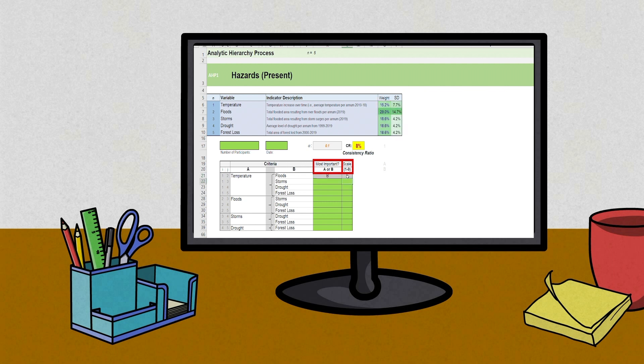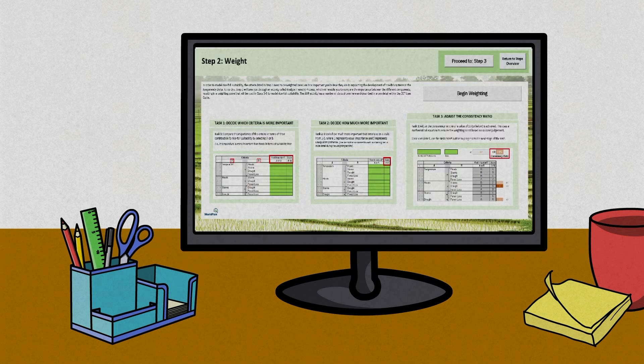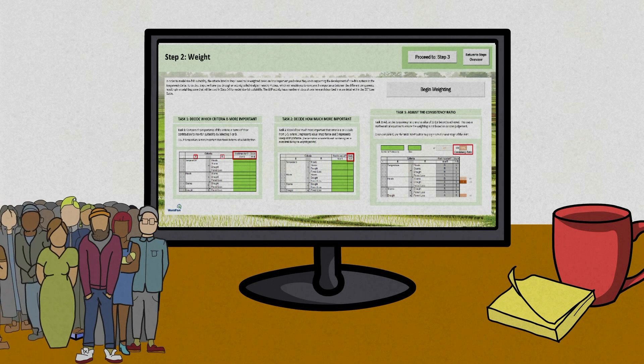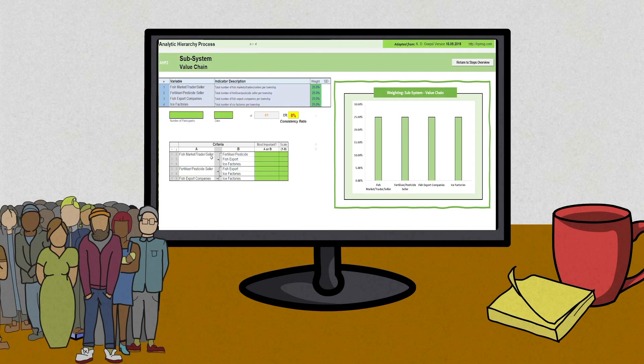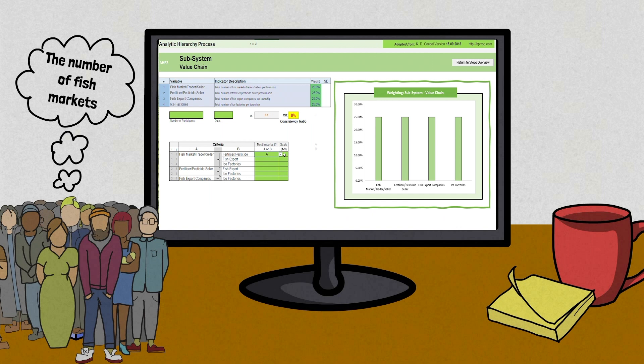All you have to do is decide which criteria is most important and by how much. Let's look at the value chain as an example. What do you believe is more important for suitability? The number of fish markets or the number of fertiliser and pesticide sellers? In that case, we give priority to that criterion. And how much more important are fish markets on a scale from one to nine? Okay, and there we have our answer.